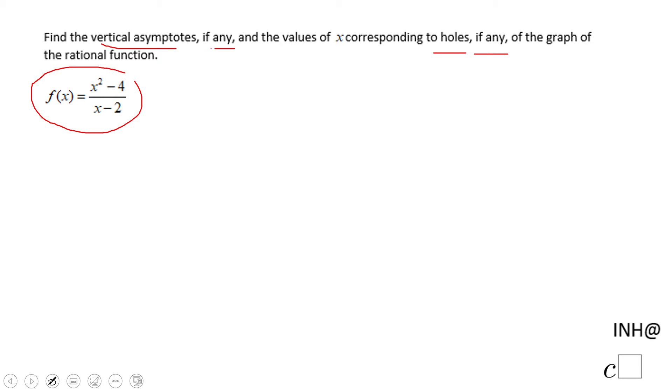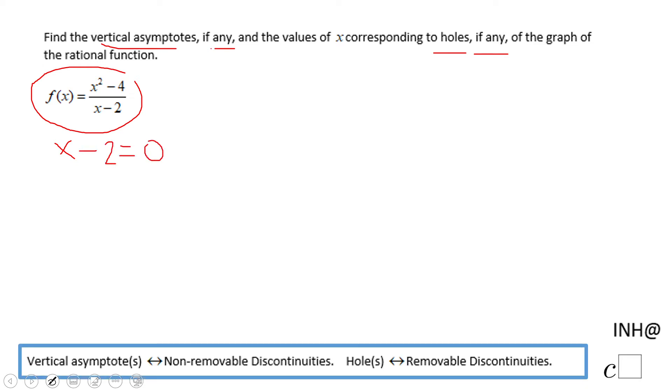For doing this, we need to take the denominator and make it equals to zero. Because that's the way we find what we call discontinuity. So we're going to get x equals 2. This is the value for which this function has a discontinuity.